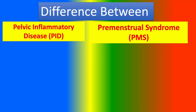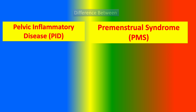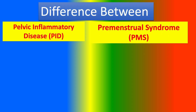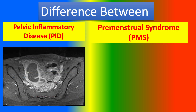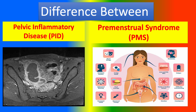The difference between Pelvic Inflammatory Disease and Premenstrual Syndrome. Look at this picture MRI — PID and the picture shows premenstrual syndromes.